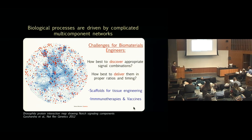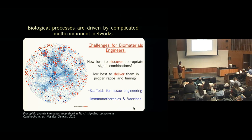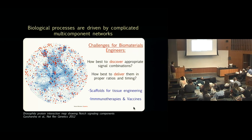This is a graphical visualization of notch signaling in Drosophila. When you're designing a biomaterial, the main challenge is how do you discover appropriate combinations of signals to push a pathway in one direction, and then how to engineer a system that can deliver them reproducibly across outbred populations of people who have their own individualized specificities. This is true regardless of whether our lab is operating in artificial tissue engineering or immunotherapy.